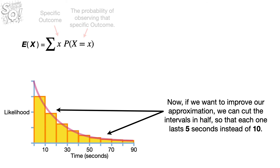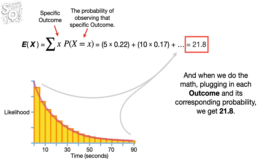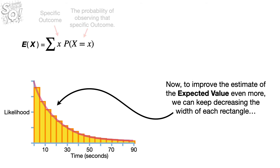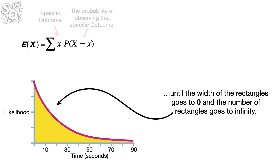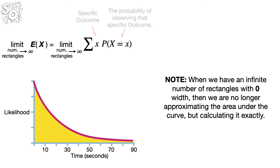To improve our approximation, we can cut the intervals in half so each lasts 5 seconds instead of 10. When we plug in each outcome and its corresponding probability, we get 21.8. To improve even further, we can keep decreasing the width of each rectangle until the width goes to 0 and the number of rectangles goes to infinity. When we have an infinite number of rectangles with zero width, we are no longer approximating the area under the curve but calculating it exactly.